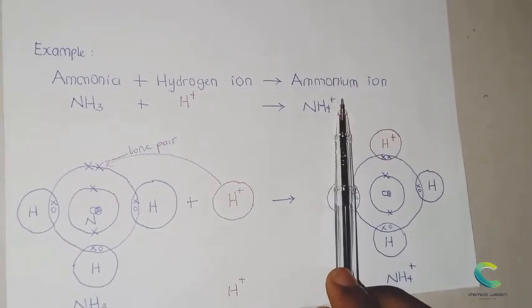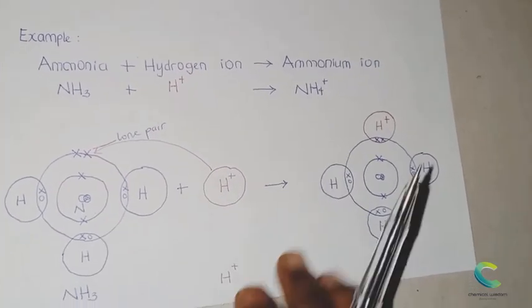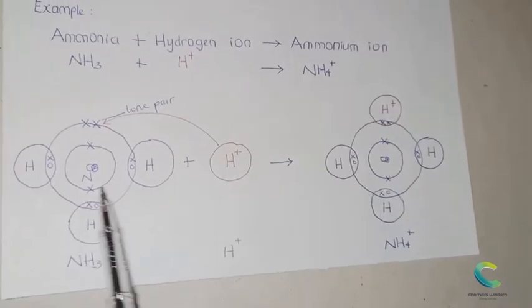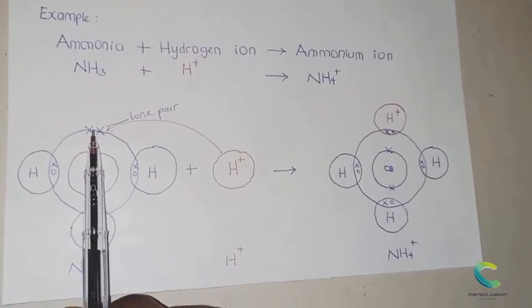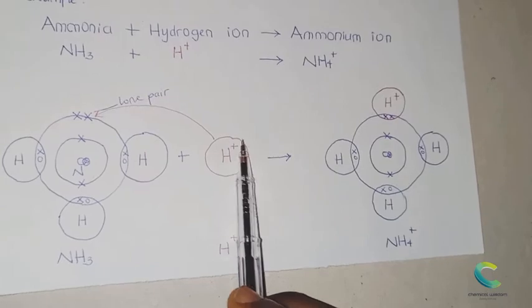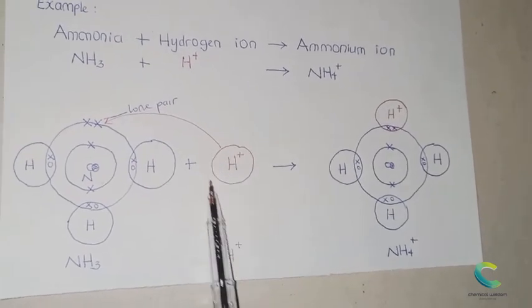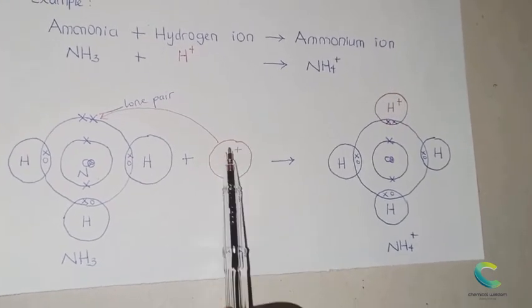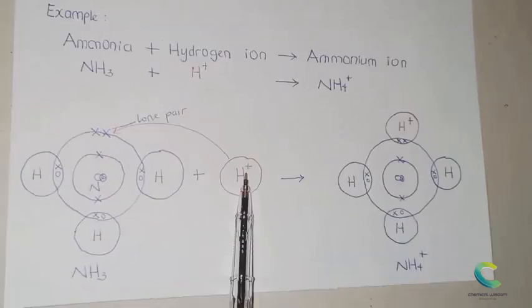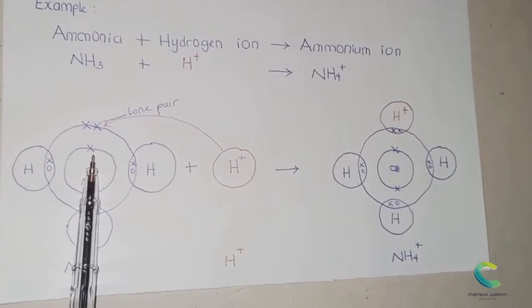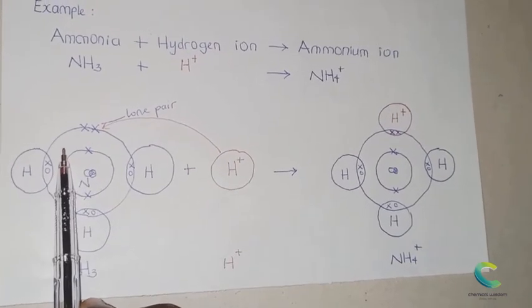If you look at the structure of ammonia, the nitrogen here has a lone pair of electrons. Meanwhile, the hydrogen ion has no electron in its valence, so this means that the hydrogen ion has no electron to share with the nitrogen in an attempt to combine with the nitrogen.